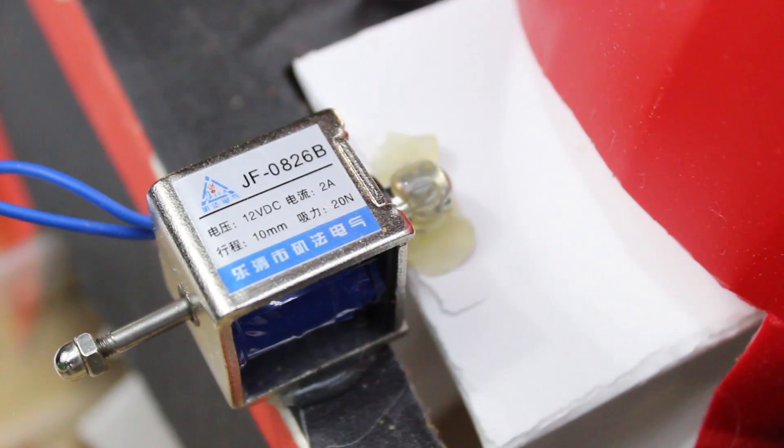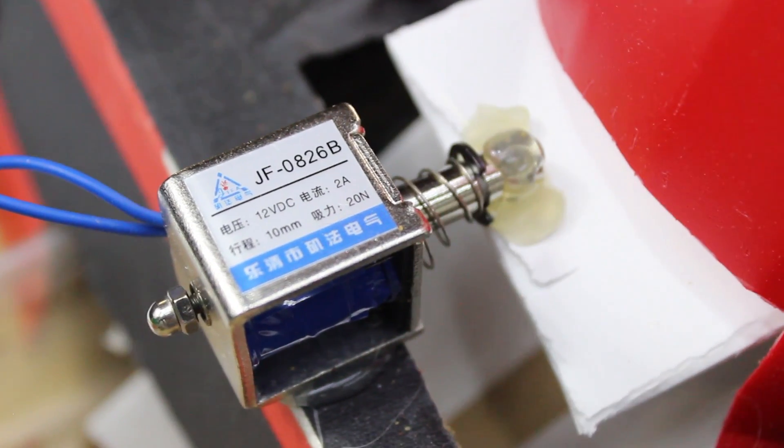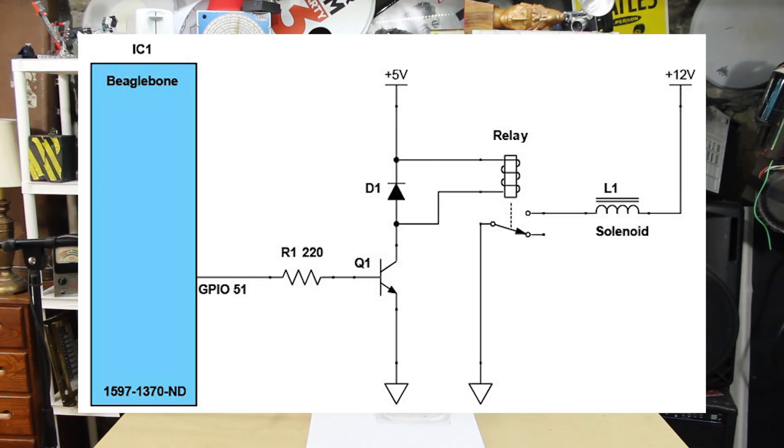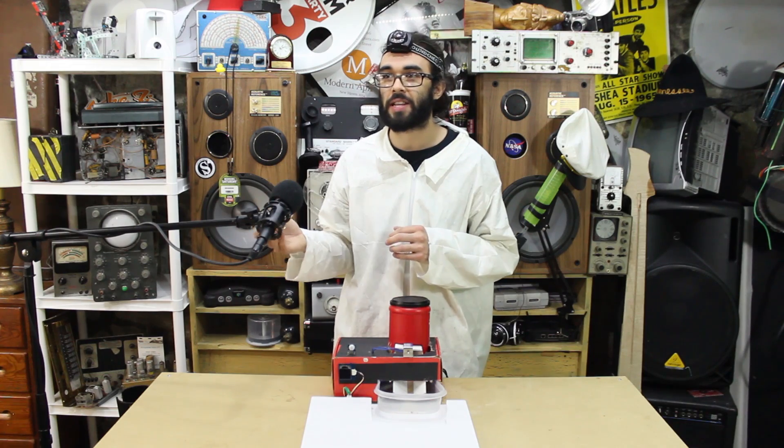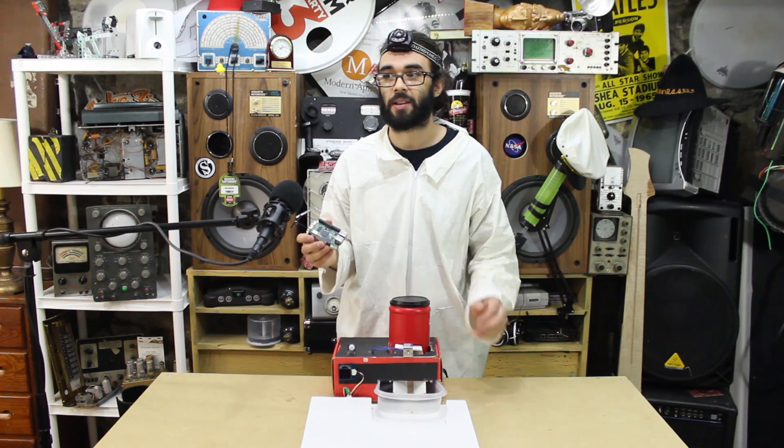We'll also need a solenoid that moves a platform, allowing food to fall. And we'll use a relay circuit to control the 12-volt power that actuates the solenoid. What's up with all these names? Beagle Bone? Raspberry Pi? I should make something called, like, an Apple Terrier.